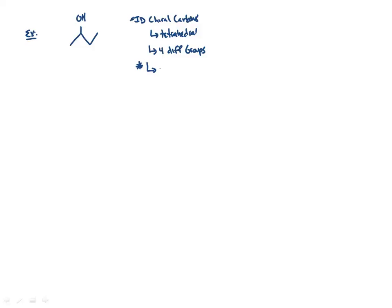Looking at 2-butanol, all carbons are tetrahedral. If we number carbons one through four, carbon number two is chiral — it has a methyl group on one side, an ethyl group (CH2CH3) on the other, an OH group, and an H. So that carbon has four different things attached to it. The carbon chain is drawn left to right with the OH pointing up.